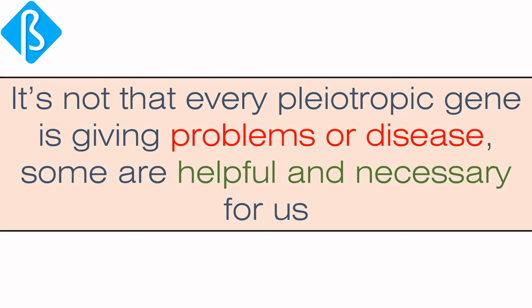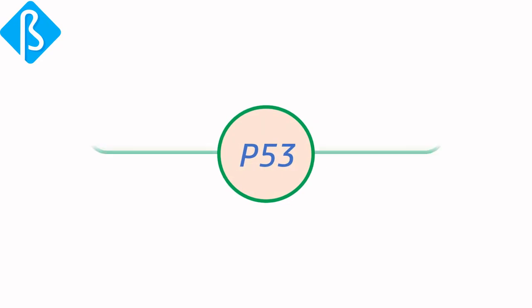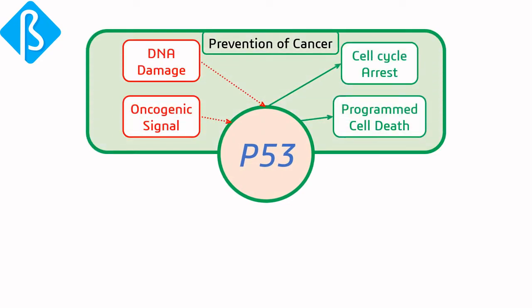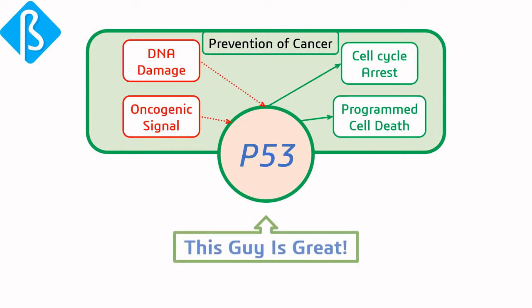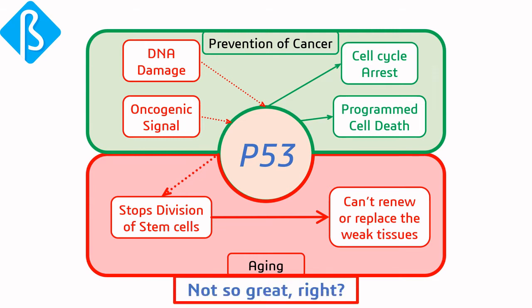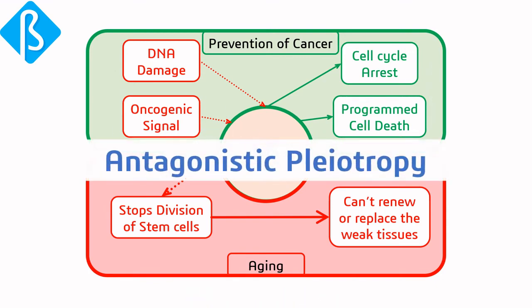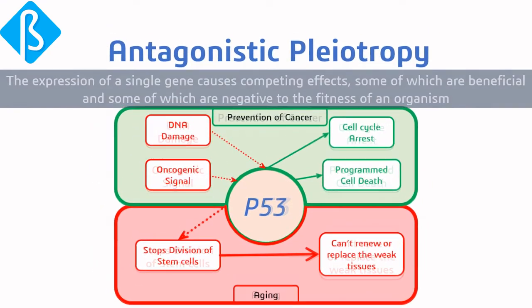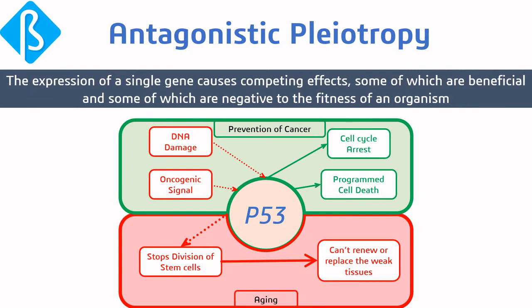Not every pleiotropic gene causes problems — some are helpful and necessary. For example, the p53 gene in humans stops reproduction of damaged cells and leads to cell death, ultimately preventing cancer. However, it also stops division of stem cells, so they cannot renew or replace weak tissues during aging. This situation is called antagonistic pleiotropy — where the expression of a single gene causes competing effects, some beneficial and some negative to the fitness of an organism.